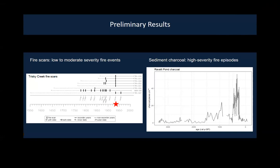We have annual reports of different events on the range. I was really interested in understanding how fire has changed and how that compares to our actual fire scar record. In 1934, there was a big fire that left some record in our fire scars — seven out of eight trees at the Trisky Creek site report a burn in that year. Fire scars indicate low to moderate severity fires; this fire didn't kill any of those trees. Comparing to our sediment charcoal record, you need pretty high charcoal production for a fire to be detected there, so it doesn't produce a huge spike.